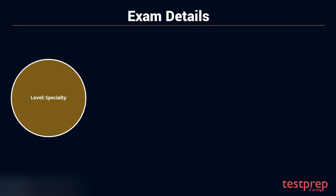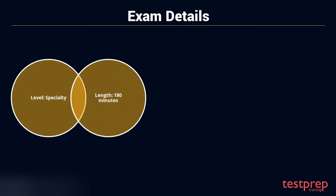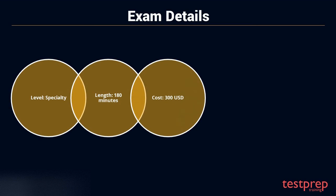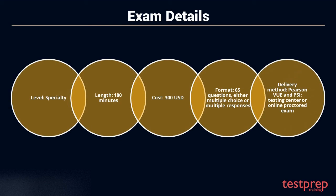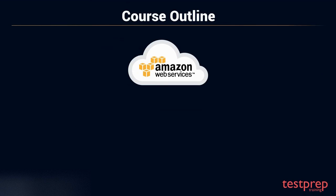Exam details: 1. Level is specialty. 2. Duration is 180 minutes to complete the exam. 3. Cost is 300 US dollars. 4. Format is 65 questions, either multiple choice or multiple responses. 5. Delivery methods are Pearson VUE and PSI, testing center or online proctored exam.